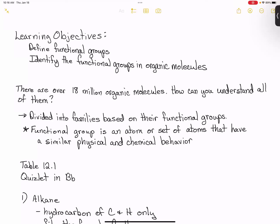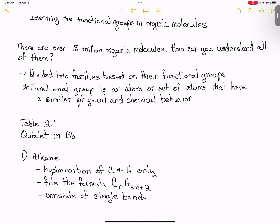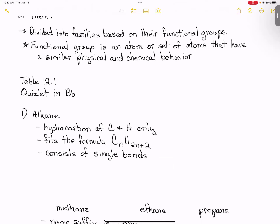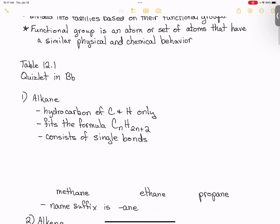The functional groups you need to know can be found in Table 12.1 of your textbook, or in the Quizlet on Blackboard. The very first functional group is that of an alkane. An alkane is a hydrocarbon that consists of carbon and hydrogen only, with nothing but single bonds, and it fits the general formula C_n H_(2n+2).